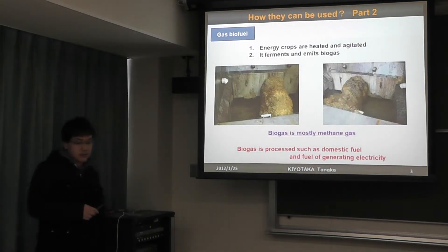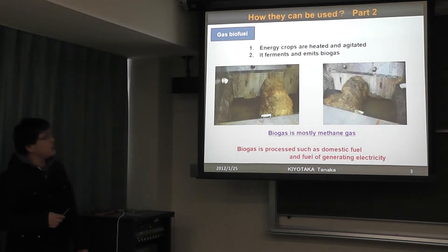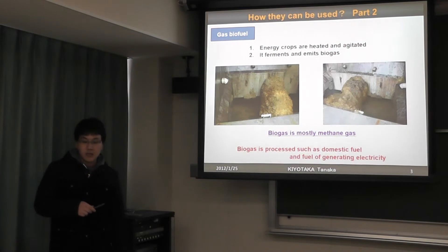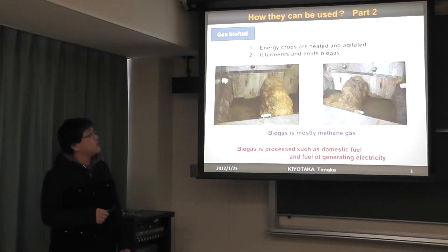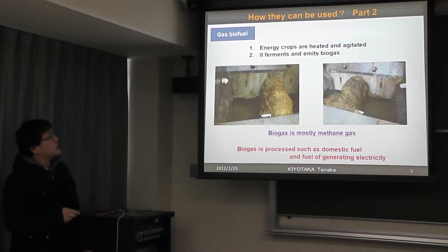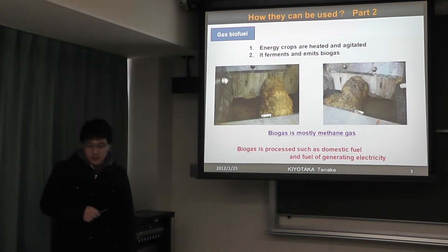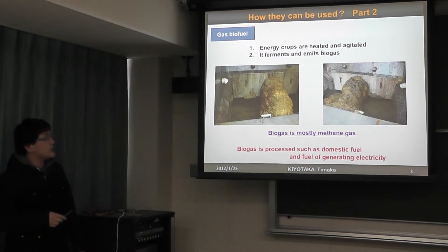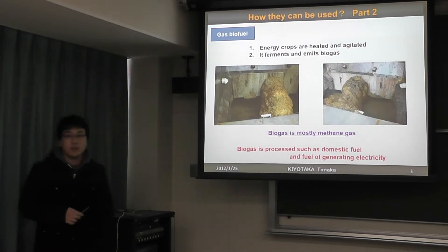Part two is gas bio-fuel. Energy crops are heated and activated, and they ferment and emit bio-gas. Bio-gas is mostly methane gas, so bio-gas is processed and used as domestic fuel and fuel for generating electricity.